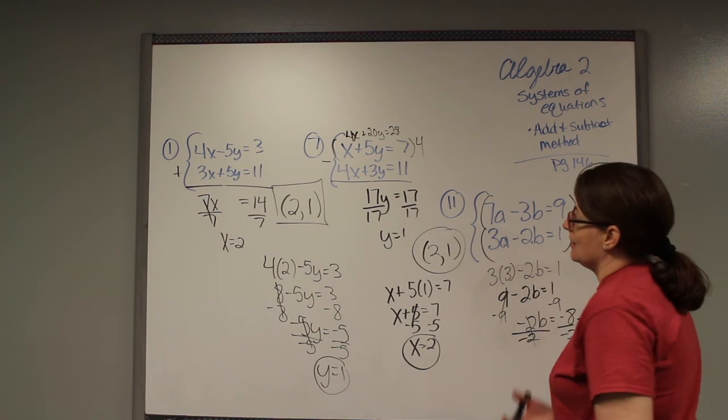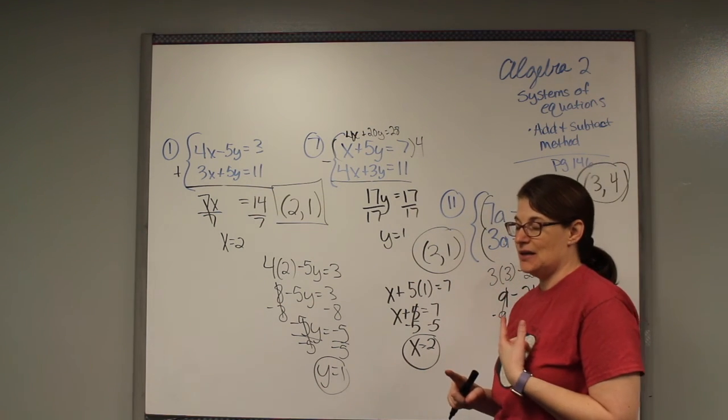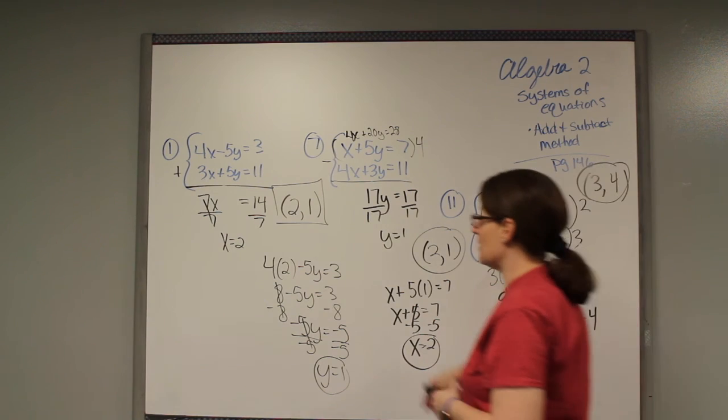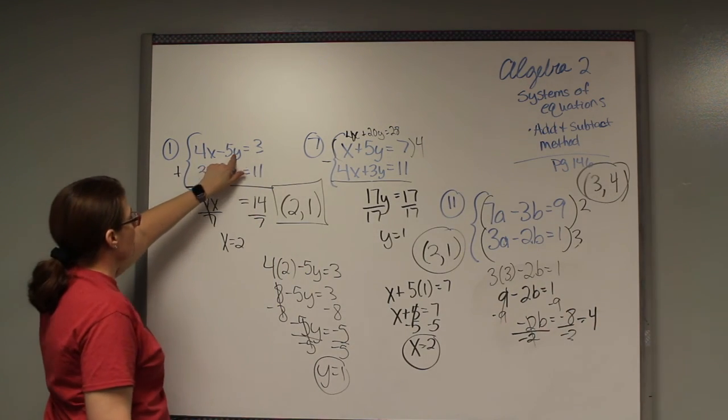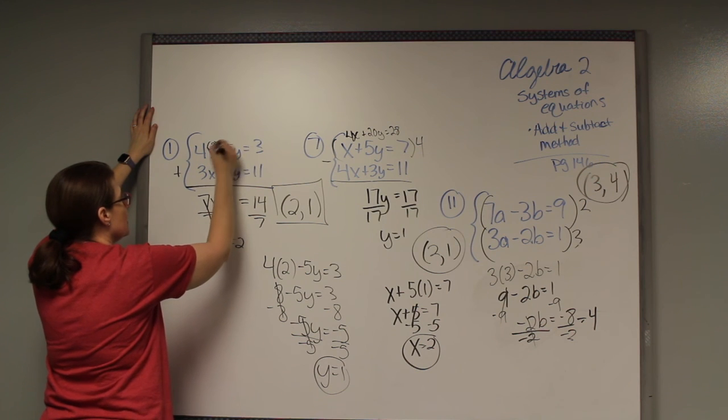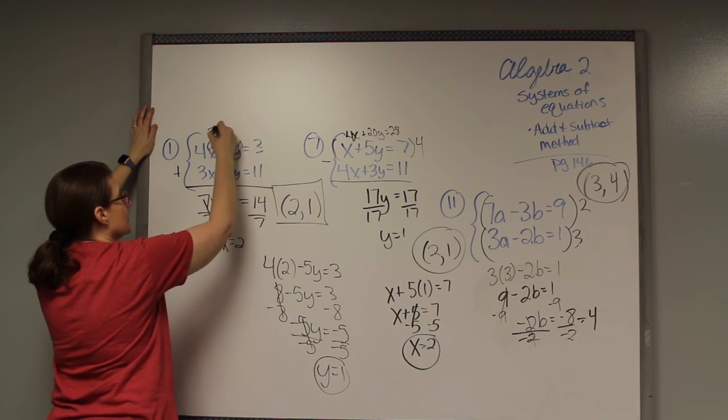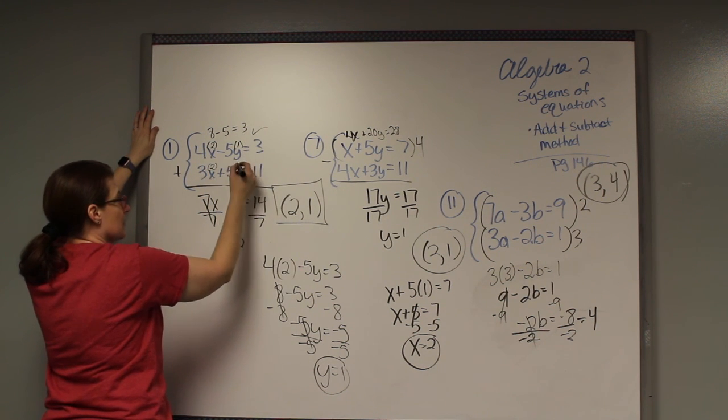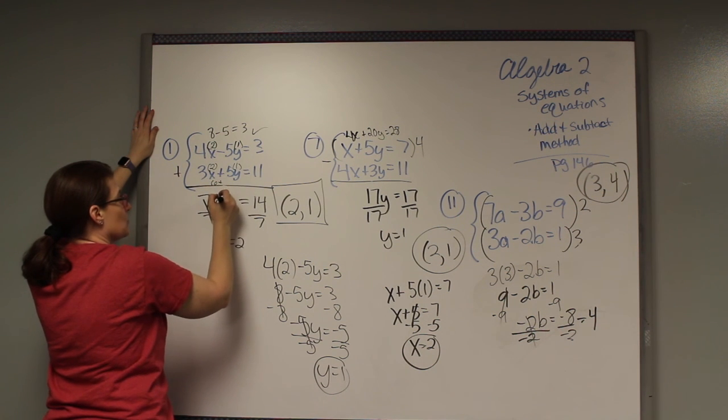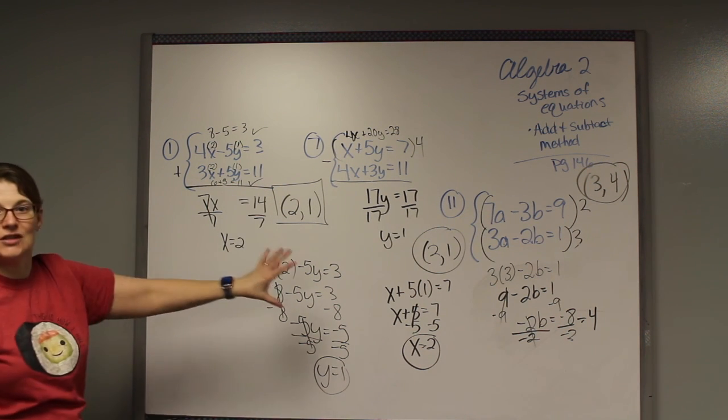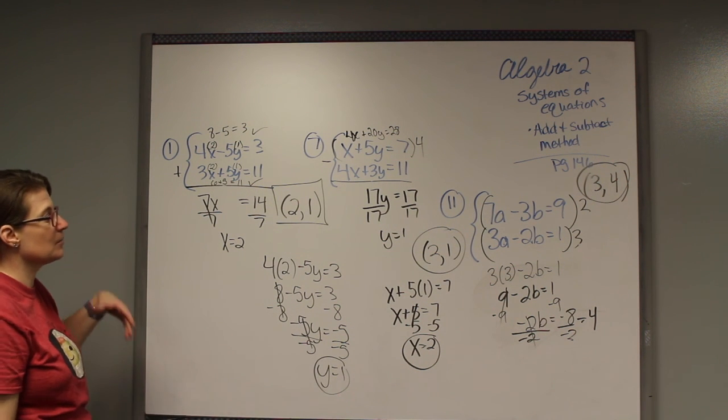In the assignment, it does say to check these, because some of these will come out dependent or inconsistent. However, I want you to get this down first before we check. What you would do is put both of these back in, your x and your y, to see if it makes that one true, and this one to make this true. If I put 2 in here, a 1 in here. 4 times 2 is 8. 5 times 1 is 5. Does 8 minus 5 equal 3? Yes. So that one's good. I put it back in here. 3 times 2 is 6. 5 times 1 is 5. Does 6 plus 5 equal 11? Yes, that's a check. But for now, just do this, and we can check them starting tomorrow.